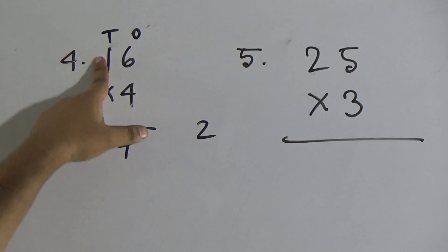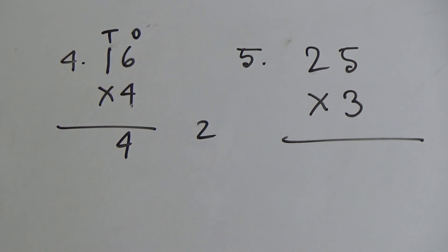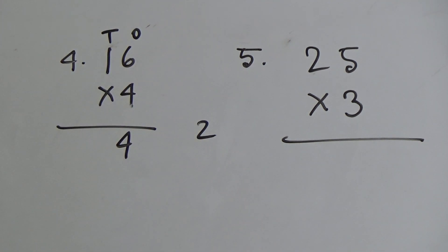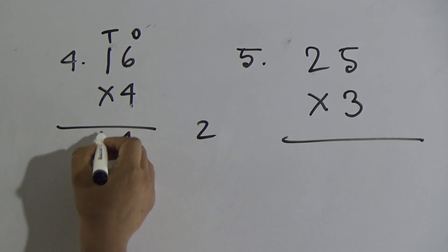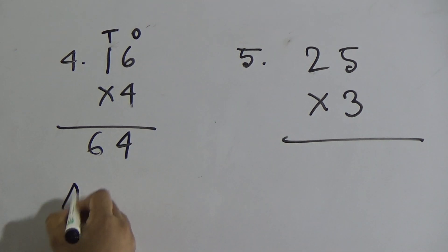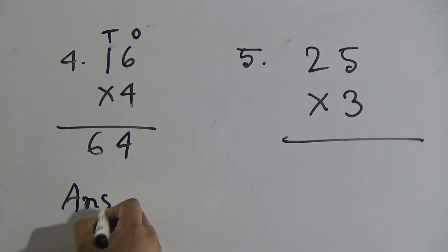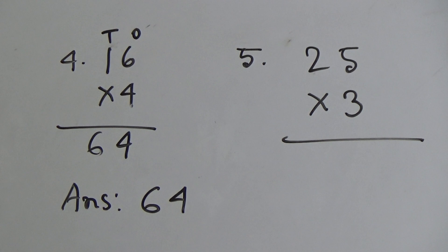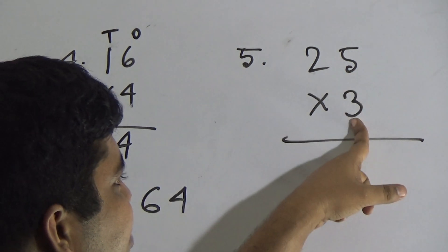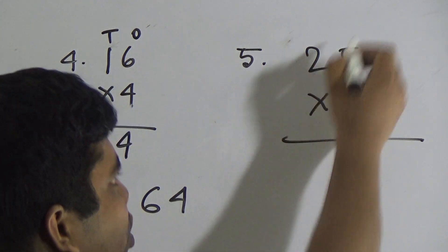Now we multiply the tens place digit 1 with 4: 4 ones are 4, and adding the carrying 2 gives 6. So 6 is placed in the tens place. The answer is 64. Next question: 25 multiplied by 3. 25 has two places — ones place and tens place. First we multiply 5 by 3, then we multiply 2 by 3.